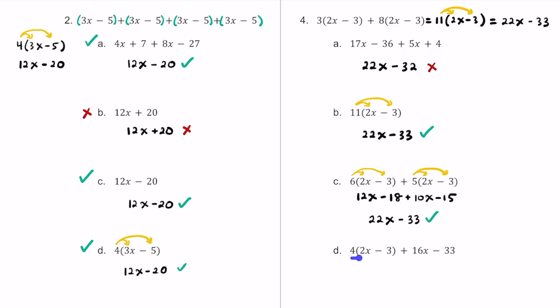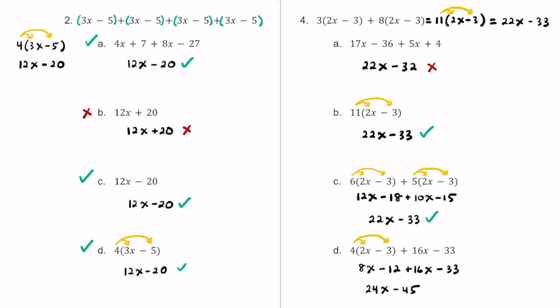For answer choice D, we have 4 times the quantity of 2x minus 3 plus 16x minus 33. Distributing the 4: 4 times 2x is 8x, and 4 times negative 3 is minus 12. Then plus 16x and minus 33. Combining like terms: 8x plus 16x is 24x, and negative 12 plus negative 33 is negative 45. So we get 24x minus 45 — this is not the same as 22x minus 33, so this expression is not equivalent.